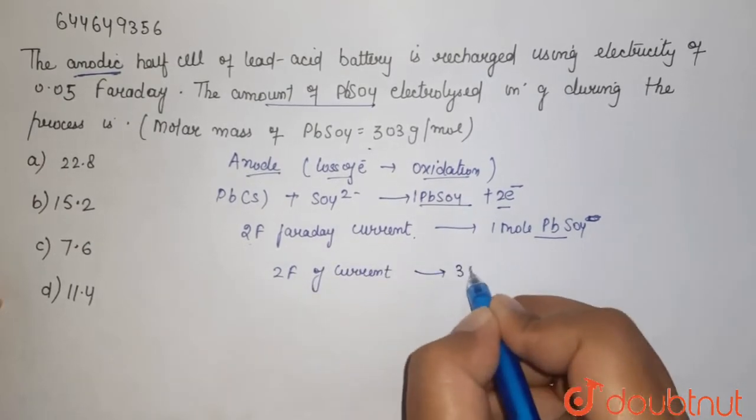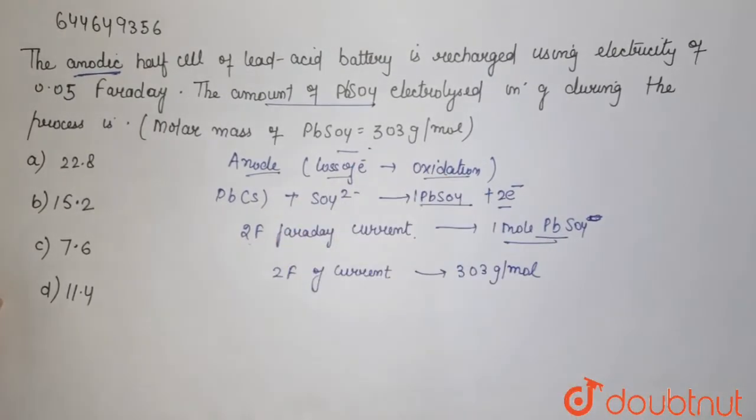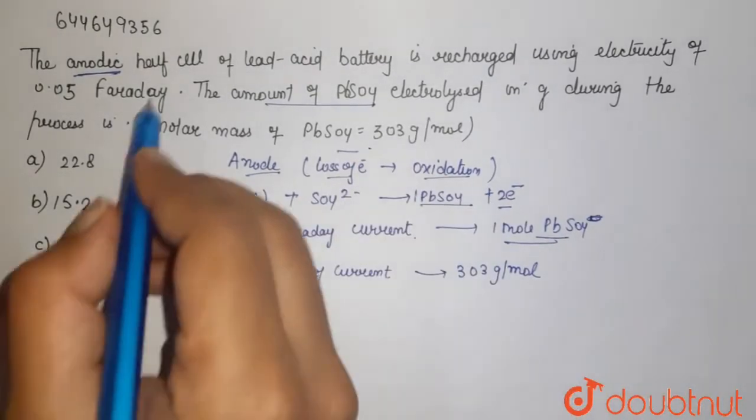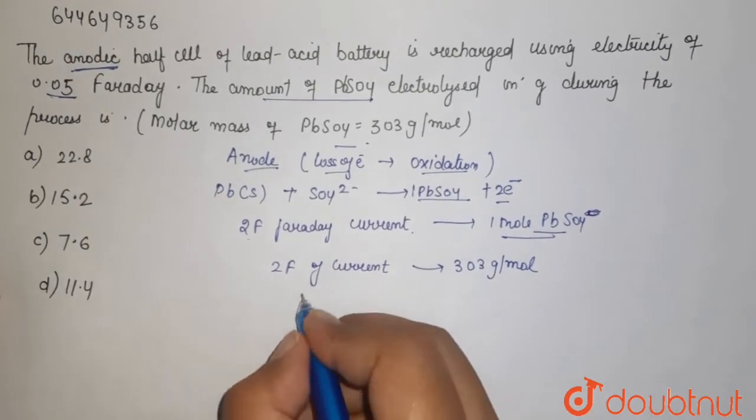It is using 303 grams per mole because the mass is given. Now if we want to calculate when there is this much Faraday, simple by unitary method.